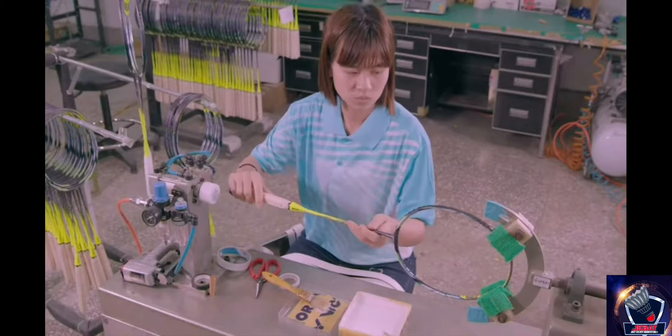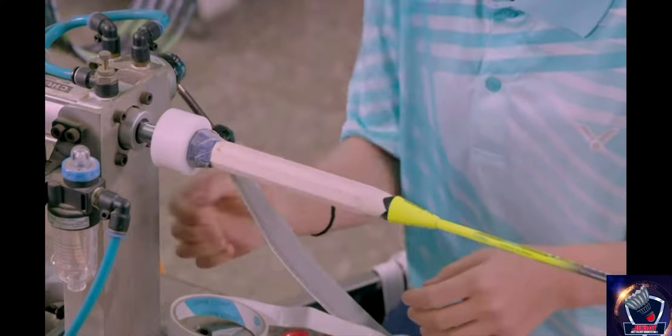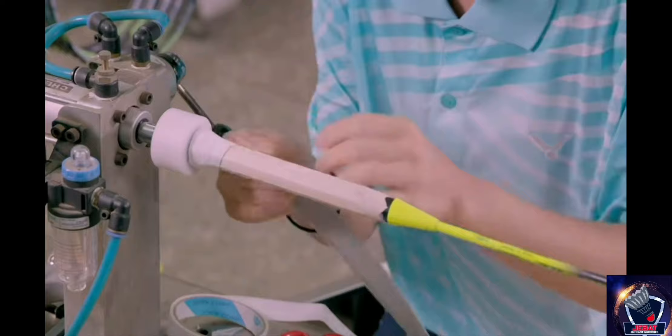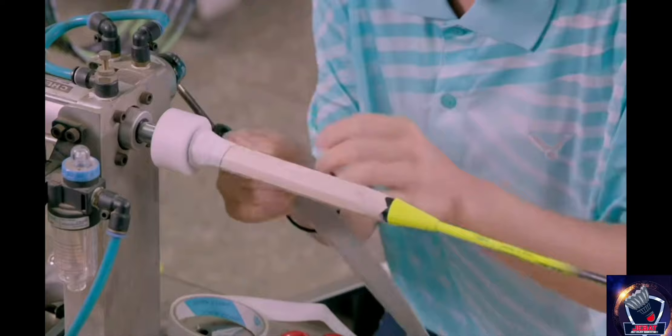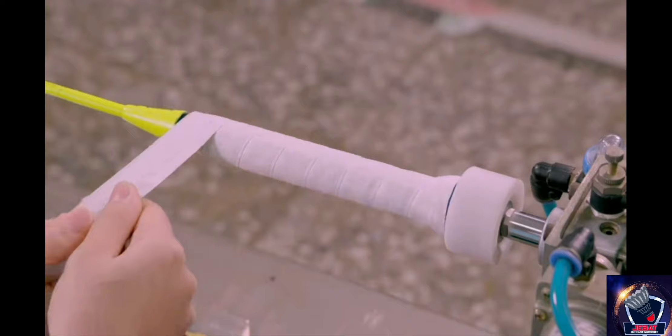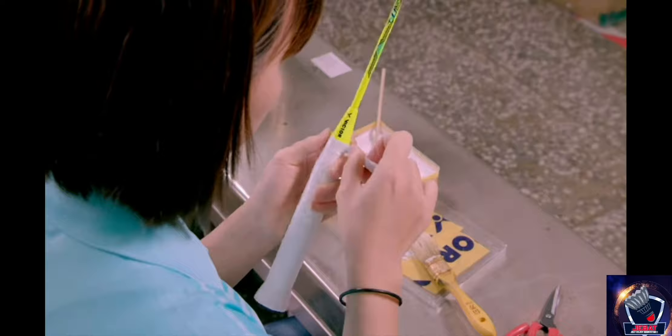A worker carefully clamps the racket into a winding machine and brushes glue onto the handle. She then secures one end of the handle wrap at the base and uses a foot pedal to begin turning the racket. Maintaining a steady tension at the correct angle, she winds the wrapping all the way up to the beginning of the shaft. She secures the top end of the wrapping with tape.